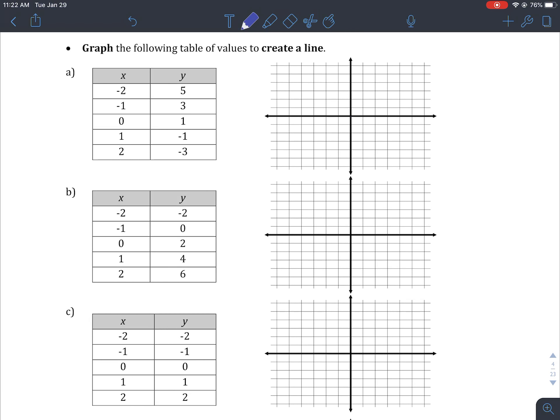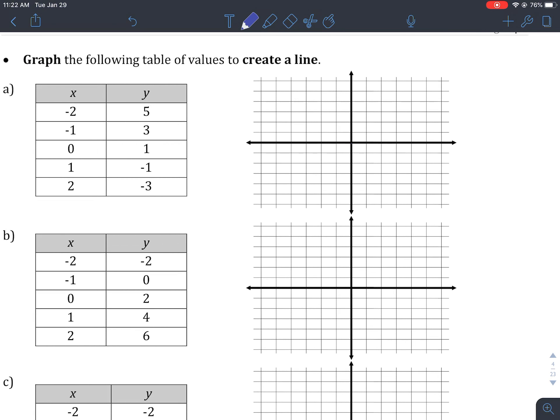There are a lot of table of values here to make lines, so I'm only going to do the first one, and I'm going to leave the other ones for you to create on your own. So I'm given an x-coordinate, we're given a y-coordinate. We can go ahead and plot those points. So the very first one, I'm going to go two left from the origin, and then five up. So two to the left, one, two, three, four, five up.